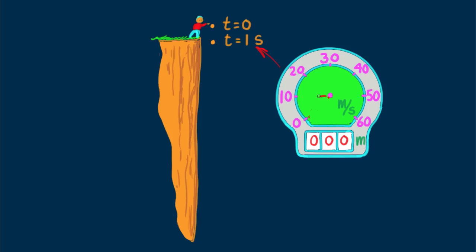Phil releases the boulder with its speedometer, and one second later, the boulder has gained 10 meters per second during this one-second interval. The odometer reading is 5 meters. That's 5 meters, not 10 meters, as we'll explain later. For now, just concentrate on changes in speed.